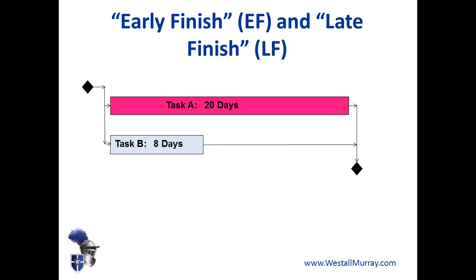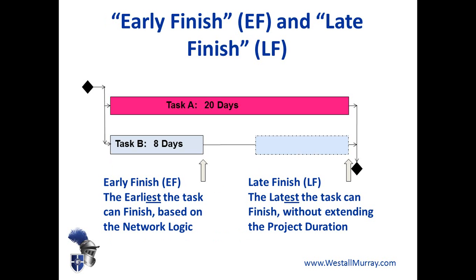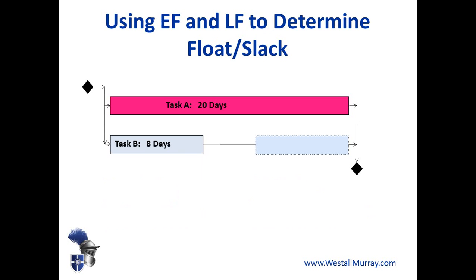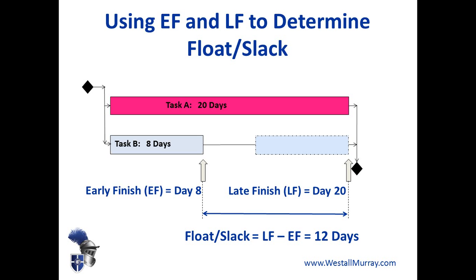Another thing we could do is compare early finish and late finish. Early finish doesn't mean something is finishing early — it means how early something could finish based on the current plan. The earliest an eight-day task can finish as currently planned is eight days after it starts. The latest that task could finish without delaying the project is at the end of the project. So again we can use early finish and late finish to determine float — it gives you the same number. If the early finish on Task B is day eight and the late finish is day 20, then 20 minus 8 gives you 12 days again.